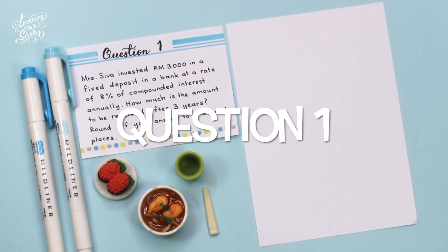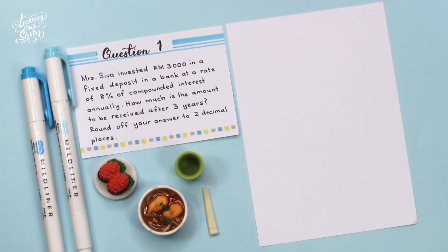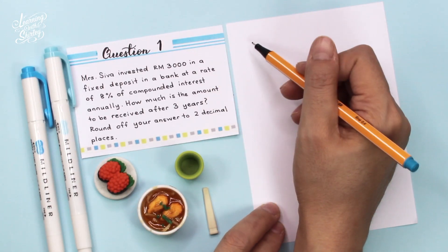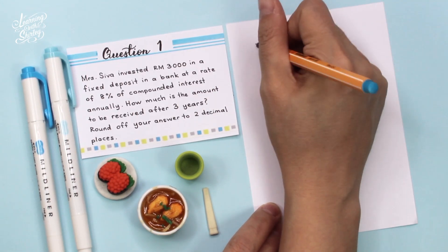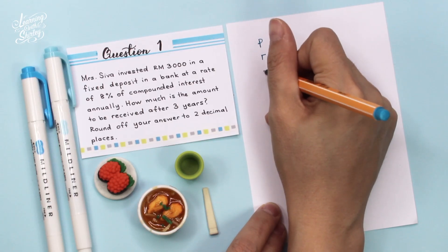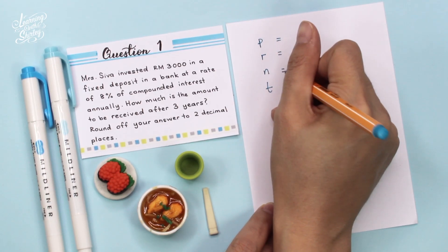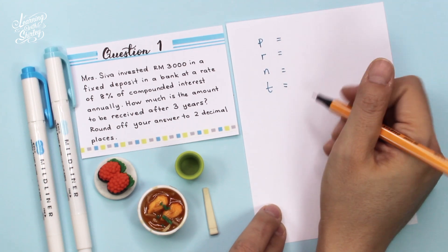For question number 1, Mr. Siva invested RM3,000 in a fixed deposit in a bank at a rate of 8% compounded interest annually. How much is the amount to be received after 3 years? Round off your answer to 2 decimal places. First, I'm going to get the information from the question. I need to find what is my P, R, N, and T. I'll get all these values from the question and then substitute into the formula.